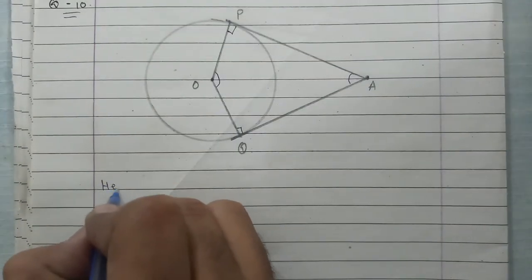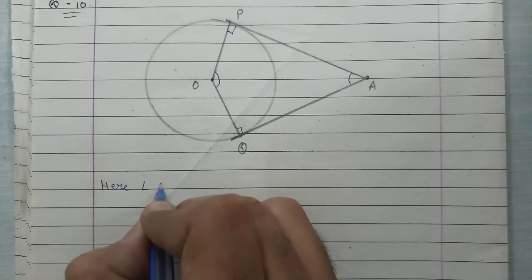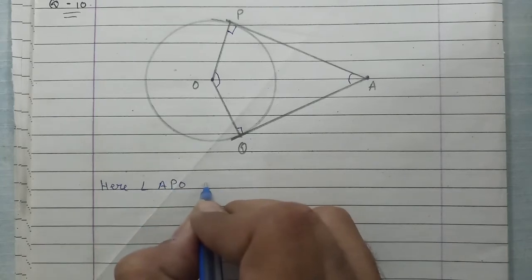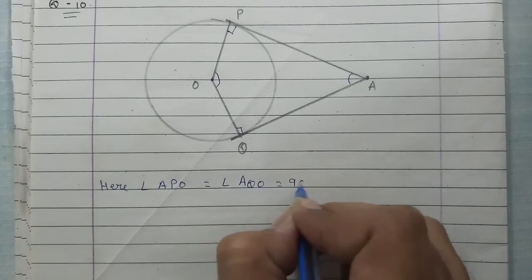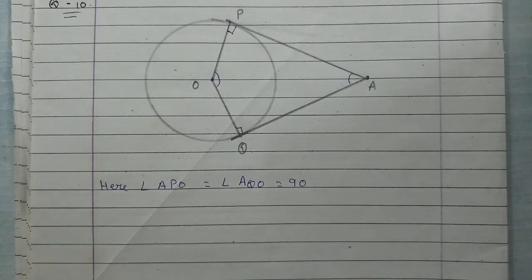So here, angle APO is equal to angle AQO is equal to 90 degrees.